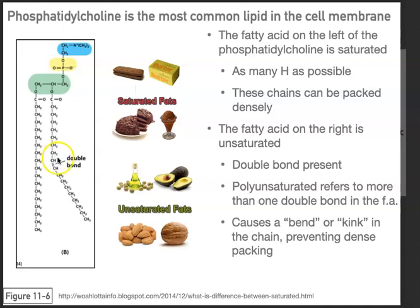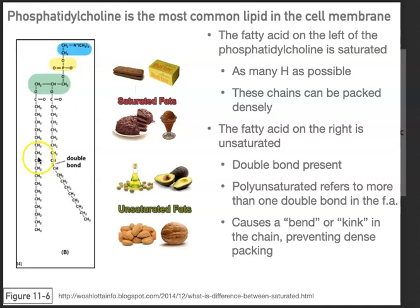If you focus on the number of bonds a carbon can form: in the unsaturated chain, a carbon forms one bond with the carbon above, one bond with a hydrogen, and two bonds with the carbon below — totaling four. In the saturated chain, that same carbon has four bonds but is bound to two hydrogens and one carbon above and one below. That's why the right chain is called unsaturated — it's unsaturated in terms of hydrogens.